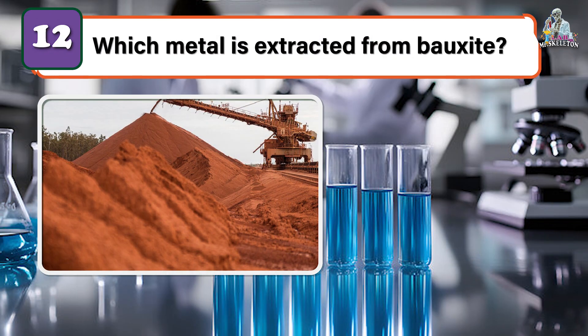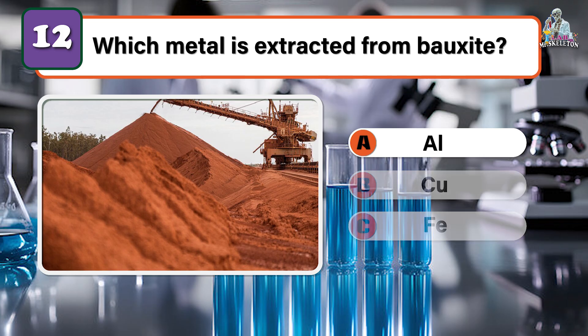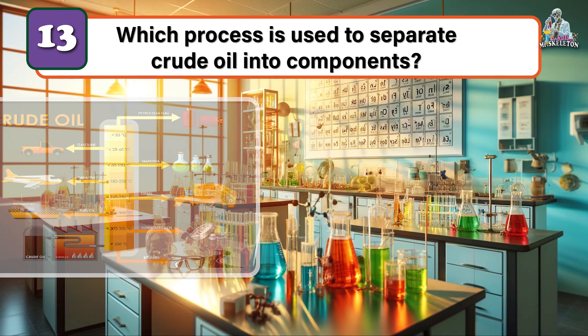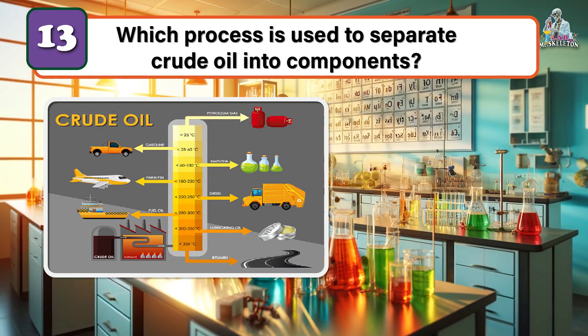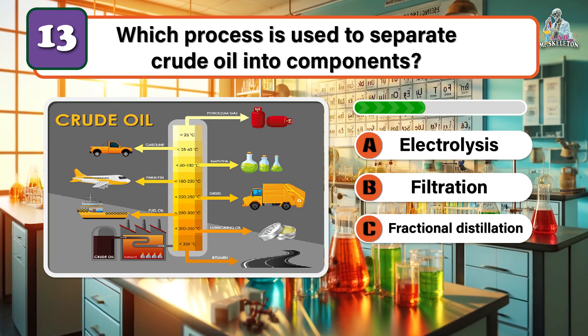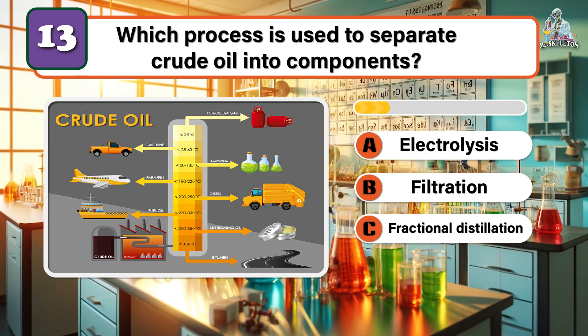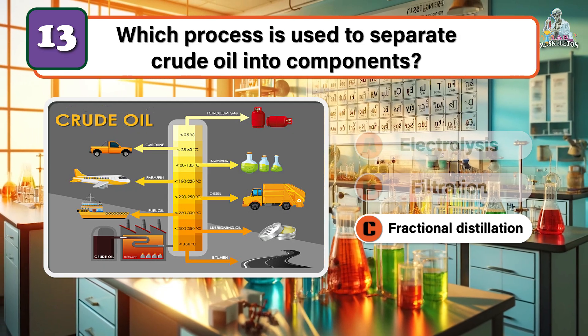Which metal is extracted from bauxite? Aluminium. Which process is used to separate crude oil into components? Fractional distillation.